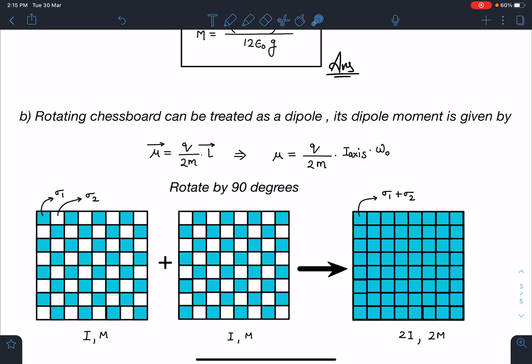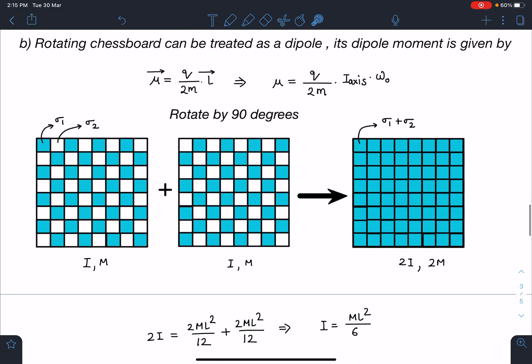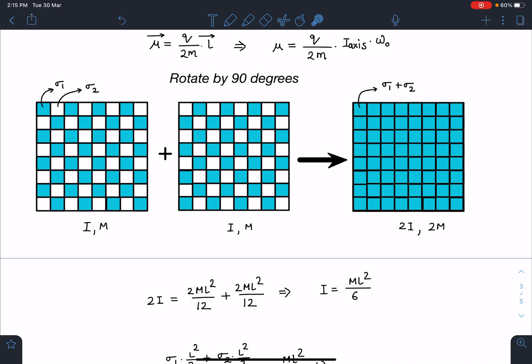For this configuration also, same moment of inertia and same mass M about the axis perpendicular to the plane. Now when I join these two, the mass becomes 2M and moment of inertia becomes 2I. Now 2I value we can write easily for the square plate: 2I = 2ML²/12 + ML²/12, so from here I = ML²/6. This I is for the chessboard.